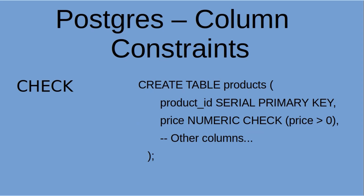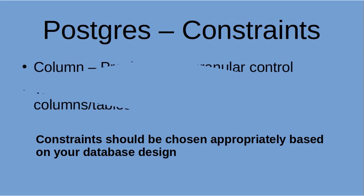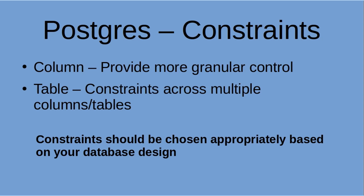In conclusion, choose constraints appropriately and wisely. They should be based on your database design and your specific requirements. Column level constraints provide more granular control over individual columns, but they can clutter the column definitions if there are many constraints. Table level constraints, on the other hand, offer a cleaner separation of concerns and allow you to define constraints across multiple columns or even referencing other tables.